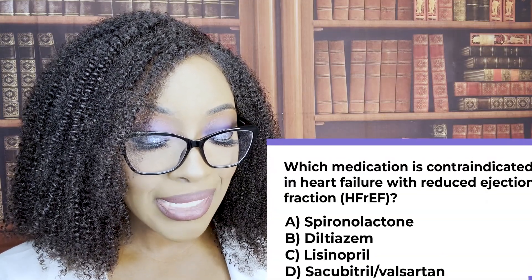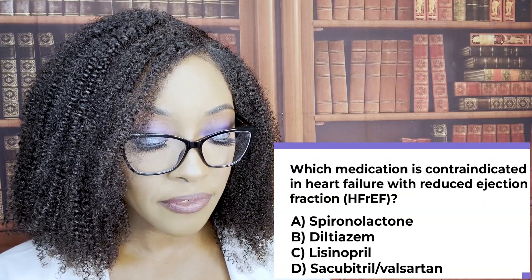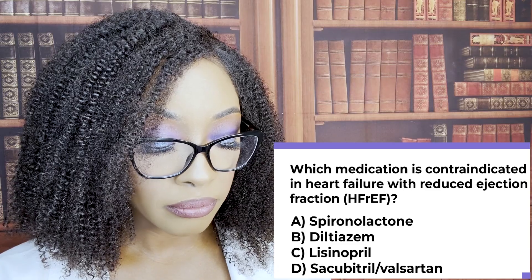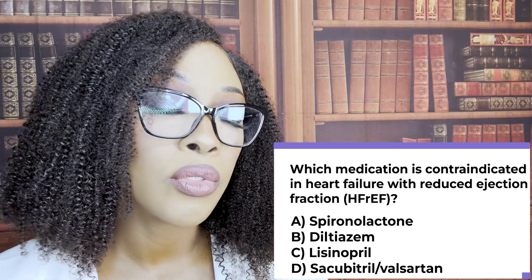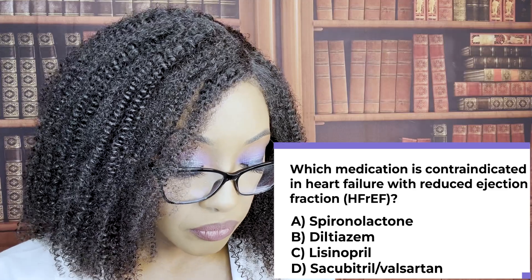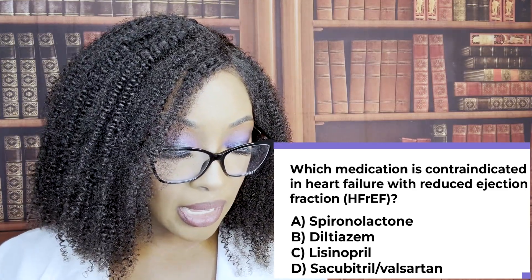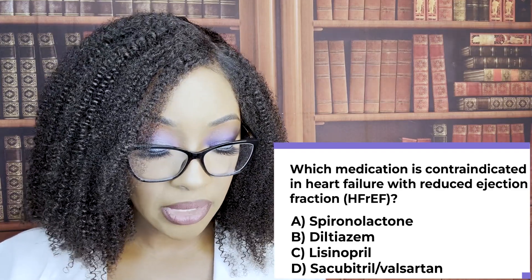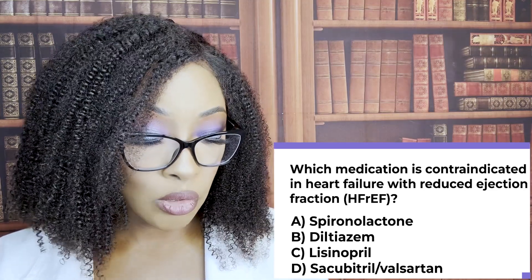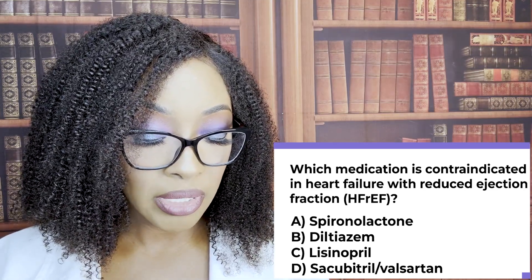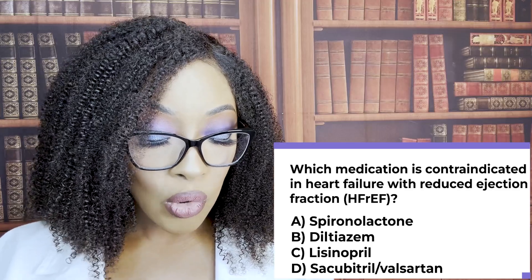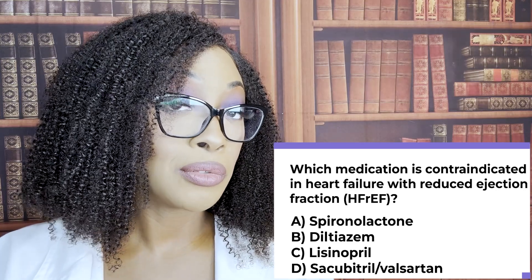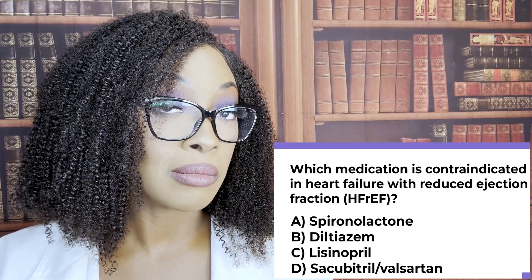Which medication is contraindicated in heart failure with reduced ejection fraction? A, spironolactone; B, diltiazem; C, lisinopril; or D, valsartan? All those options — you need to know their drug classes. The correct answer is B, diltiazem, because of its negative inotropic effect. Also add verapamil to that list of contraindicated medications in HFrEF — you need to know that for testing purposes. Both are calcium channel blockers.